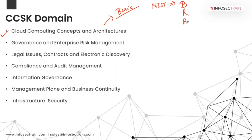NIST defines different aspects of cloud: broad network access, resource pooling, rapid elasticity, on-demand self-service, and measured service — these five essential characteristics. Then it will talk about your deployment models and service types like IaaS, PaaS, SaaS, and deployment models like public, private, hybrid, and community cloud.